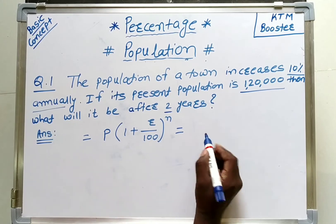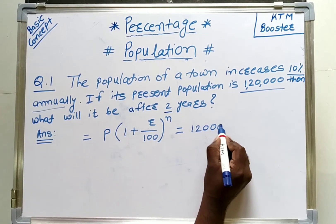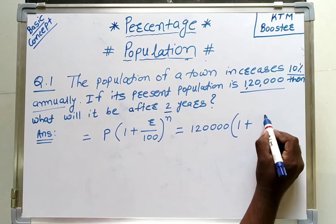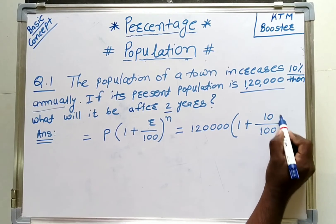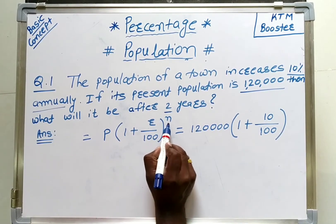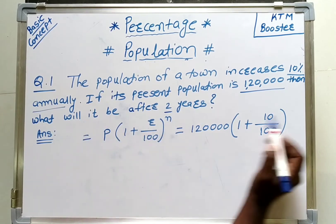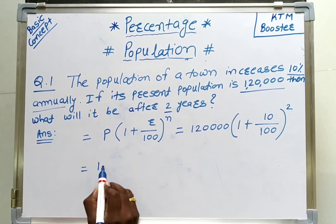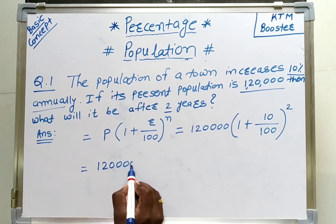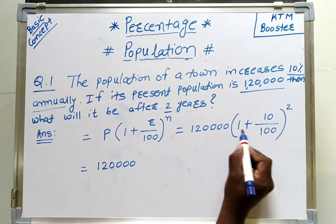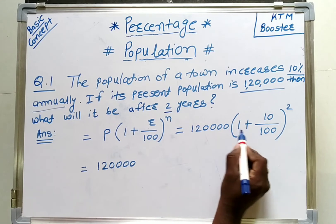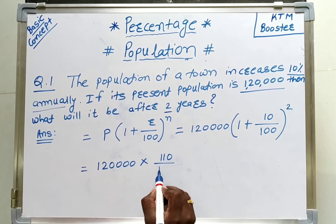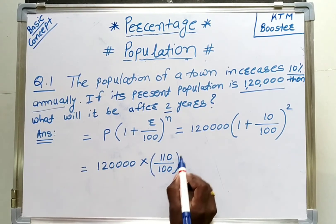Now substituting values: P is 1,20,000 into 1 plus 10 upon 100, bracket raised to 2. This simplifies to 1,20,000 into 110 upon 100, squared. That is 1,20,000 into 11 upon 10, into 11 upon 10.